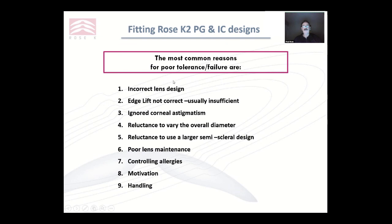Some of the most common reasons for failure: incorrect lens design — which is the one I see more and more; not paying enough attention to the edge lift; ignoring corneal astigmatism when it's affecting the fit; reluctance to vary the overall diameter from the trial set; and reluctance to use a larger semi-scleral design when corneal lenses just don't work.